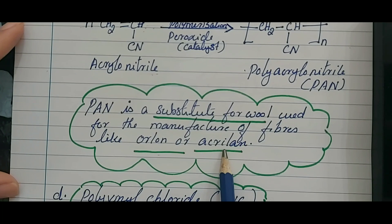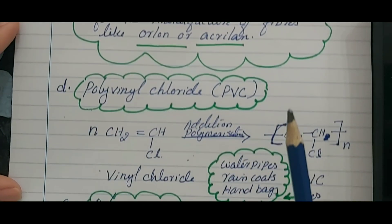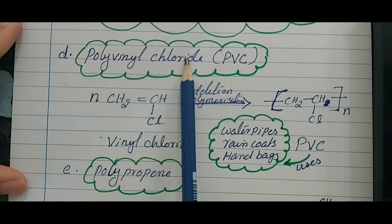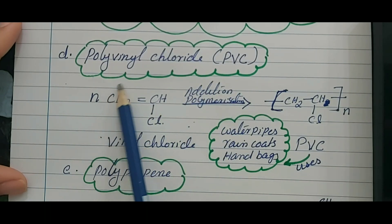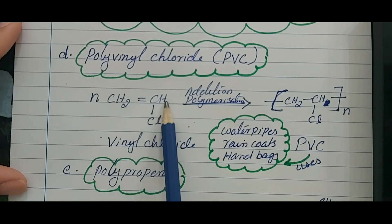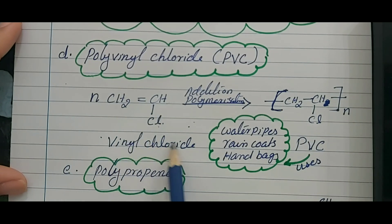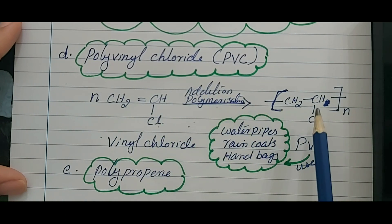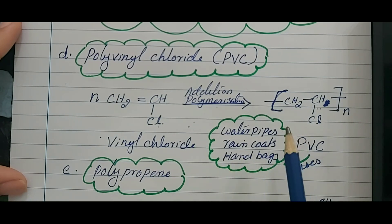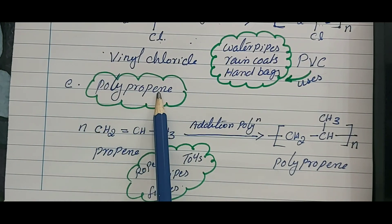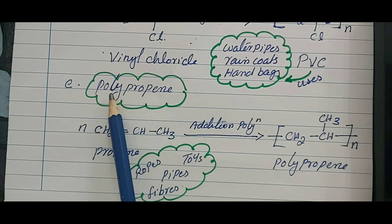The fourth addition polymer is PVC — polyvinyl chloride. The parent is ethene CH₂=CH₂, but one hydrogen is replaced by Cl to give vinyl chloride. By addition polymerization you get PVC, which is normally used for making water pipes, raincoats, handbags, etc.